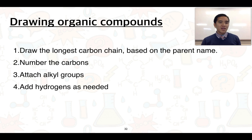There are four rules that we need to follow. From the name, what we do is we draw the longest carbon chain, and that's based on the parent name. The second rule is to then number the carbons.